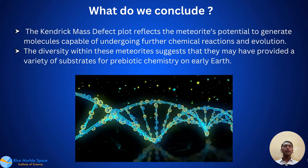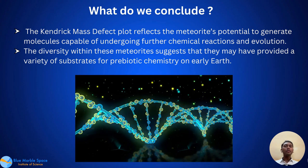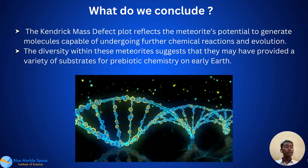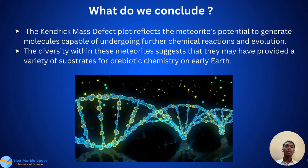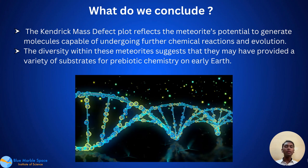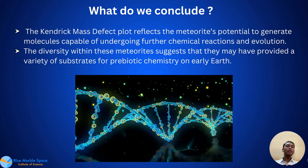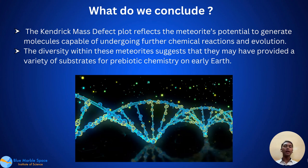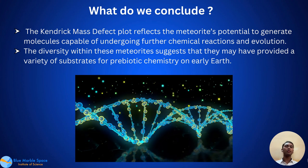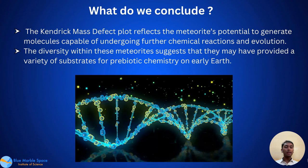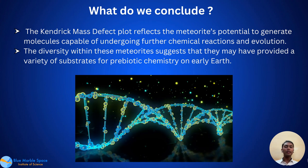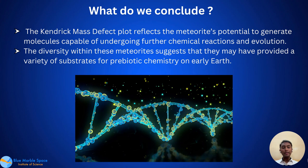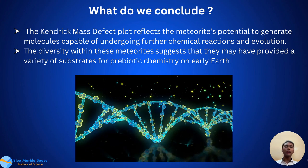We conclude that the Kendrick mass defect plot reflects the meteorite's potential to actually generate molecules capable of undergoing further chemical reactions and evolution. This diversity within the meteorite suggests that they may have provided a variety of substrates for prebiotic chemistry on early Earth. So yes, we indeed succeeded in our project, and these meteorites of carbonaceous composition really contributed to the origin of life on Earth.